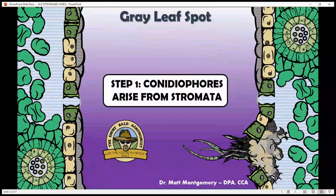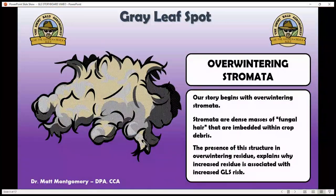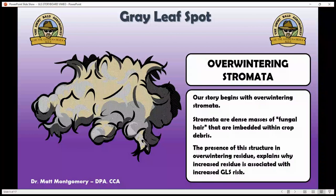The very first step in Gray Leaf Spot involves structures called canidiophors that arise from these things called stromata. If you were to look at the cross section of a leaf, you'd see this fuzzy looking thing — this mass of fungal hair called a stromata. This dense mass of fungal hair embedded in the residue is actually the overwintering structure, and it's pretty hardy. The fact that it overwinters within residue explains one of the things we deal with when it comes to Gray Leaf Spot: residue tends to increase our risk of seeing disease.